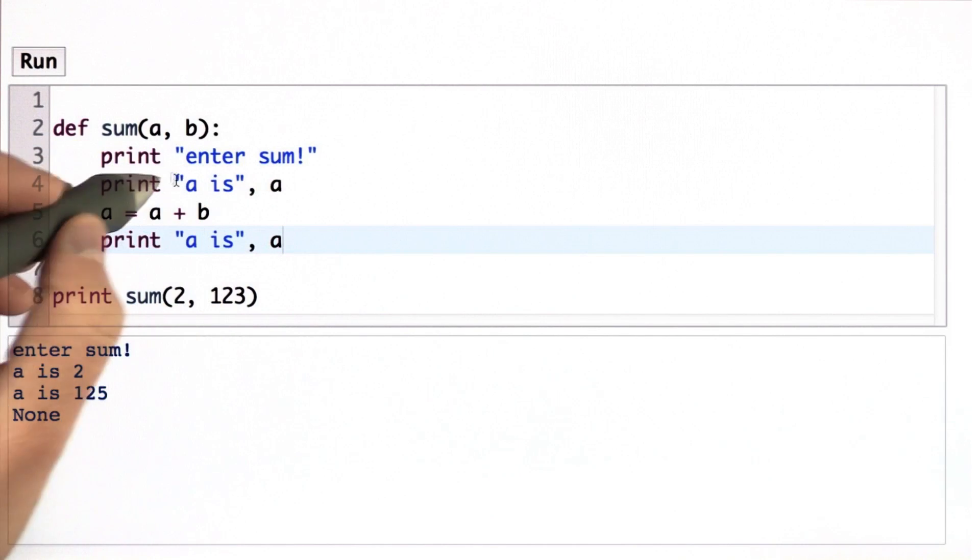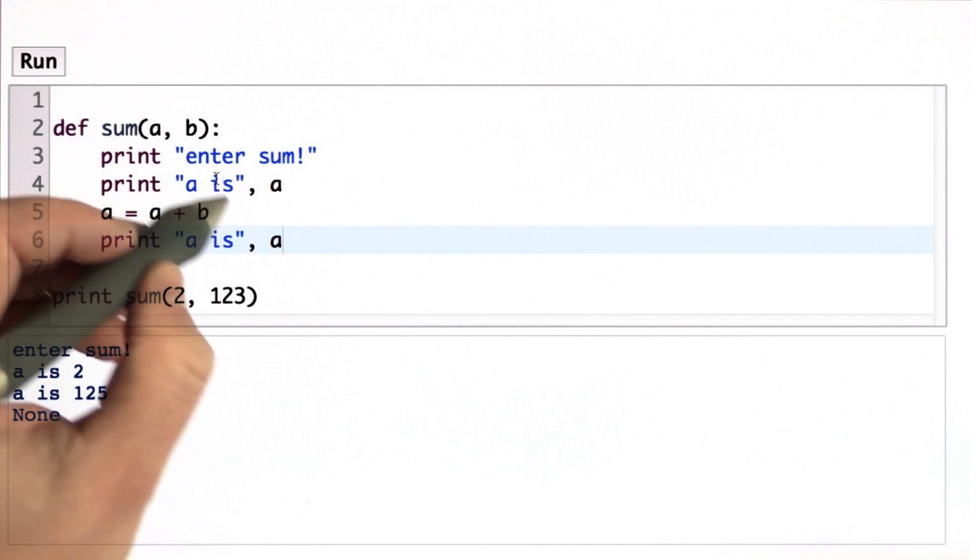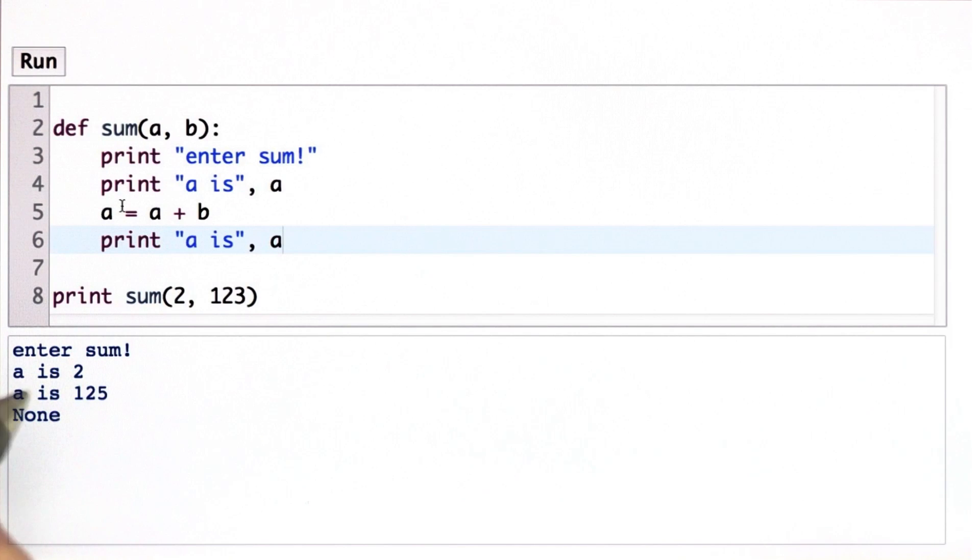When we print out the first print, a is 2. We see a is 2. We do the arithmetic. That changes the value of a. So now running the same print, prints out the value of a is 125. Then we return. We have the result. The result is none. There's no output from sum, and that's what gets printed out.